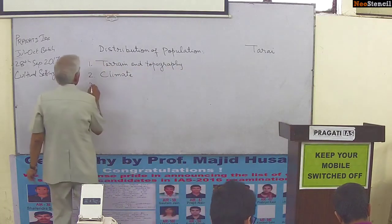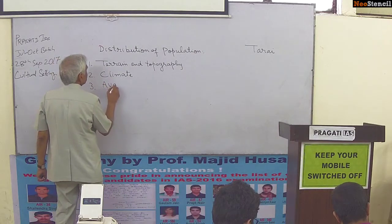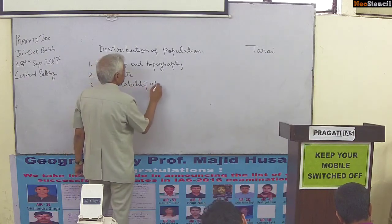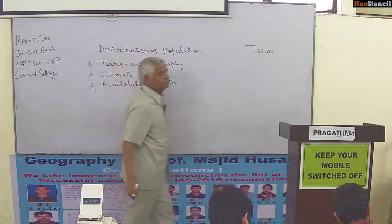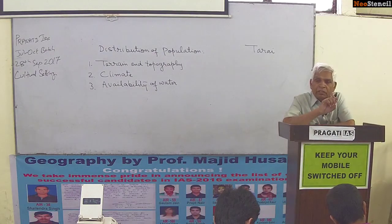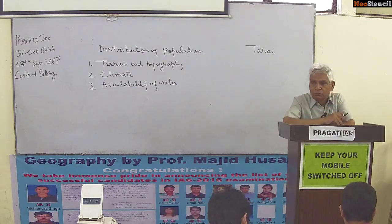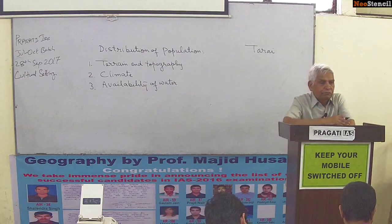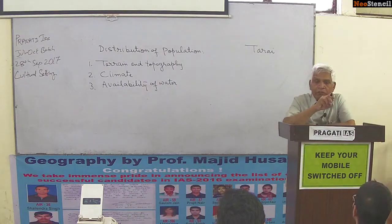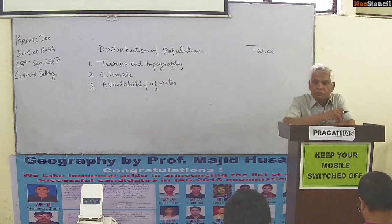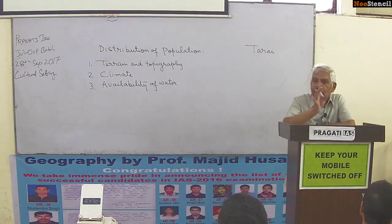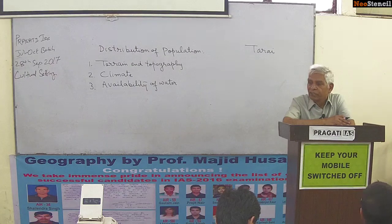The third factor is the availability of water, which also determines the distribution of population. For survival, humans need food and water, and of the two, water is more important — we cannot survive more than 3 to 4 days without drinking water. Water is also required for domestic use, irrigation, agriculture, industries, and river transport. Water is a multipurpose asset.